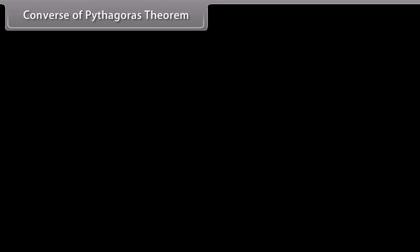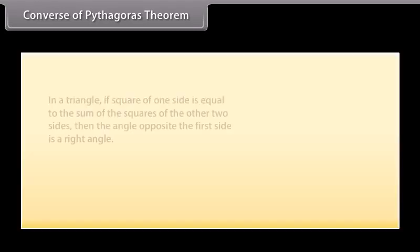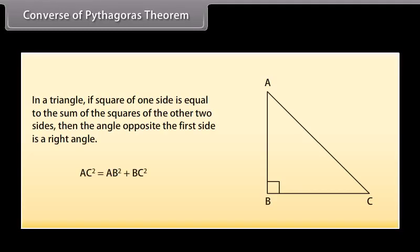Converse of Pythagoras Theorem: In a triangle, if the square of one side is equal to the sum of the squares of the other two sides, then the angle opposite the first side is a right angle.